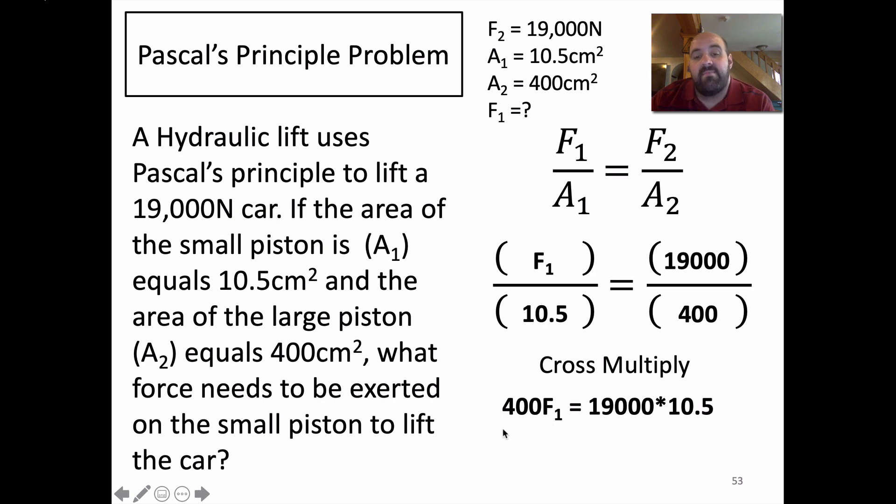And, of course, you just solve this for F₁ by dividing both sides by 400. And we call that isolating the variable in math class. And you get an answer around 499 Newtons.